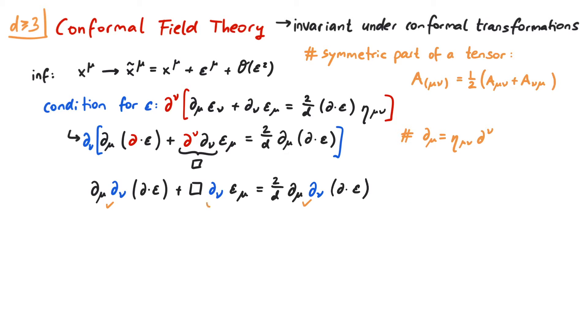For the remaining term, we have to write down the symmetric part which is given by one-half times d_nu epsilon_mu plus d_mu epsilon_nu. Using our first equation for epsilon, we can replace the symmetrized terms with 2 over d times the divergence of epsilon times eta_mu_nu. Let's also multiply the whole equation with d so that we can get rid of the fraction.